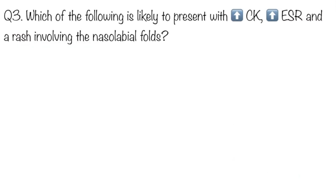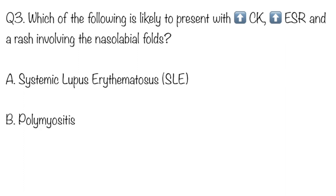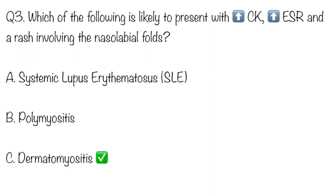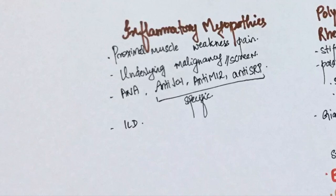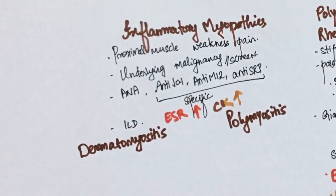Question number three: which of the following is likely to present with high ESR, high CK, and a skin rash affecting the nasolabial folds? Option A: systemic lupus erythematosus. Option B: polymyositis. Option C: dermatomyositis. The answer is dermatomyositis. Inflammatory myopathies are of two kinds: dermatomyositis and polymyositis; they both share the above-mentioned features.